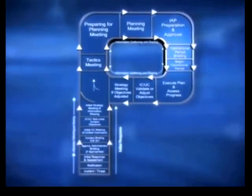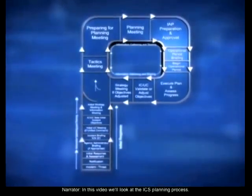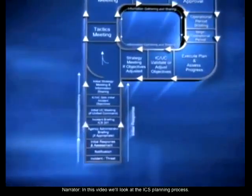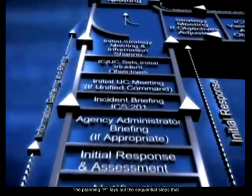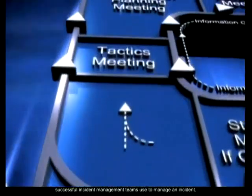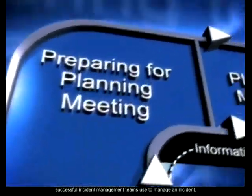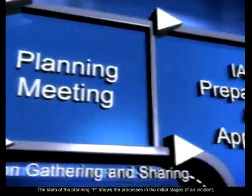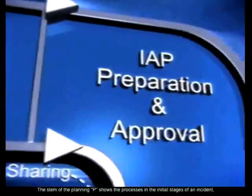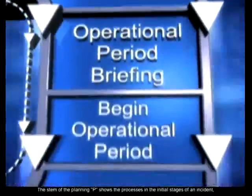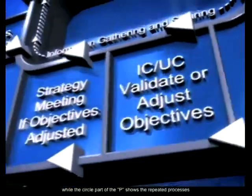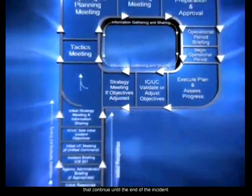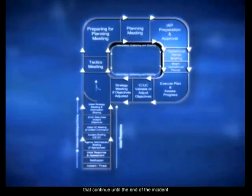In this video, we'll look at the ICS planning process. The planning P lays out the sequential steps that successful incident management teams use to manage an incident. The stem of the planning P shows the processes in the initial stages of an incident, while the circle part of the P shows the repeated processes that continue until the end of the incident when the planning process is no longer required.